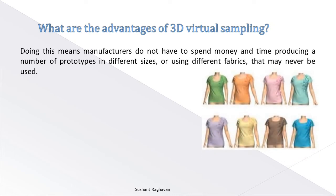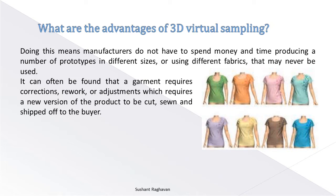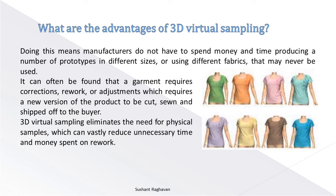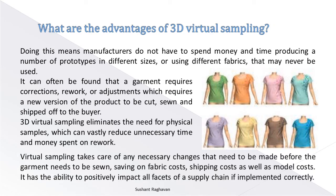Manufacturers do not have to spend money and time producing a number of prototypes in different sizes or using different fabrics that may never be used. It can often be found that a garment requires corrections, rework, or adjustments, which requires a new version of the product to be cut, sewn, and shipped off to the buyer. 3D virtual sampling eliminates the need for physical samples, which can vastly reduce unnecessary time and money spent on rework. Virtual sampling takes care of any unnecessary changes before the garment needs to be sewn, saving on fabric costs, shipping costs, as well as model costs. It has the ability to positively impact all facets of a supply chain if implemented correctly.